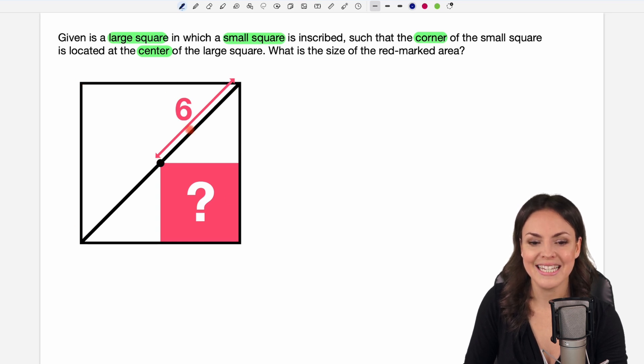We are also given this side of length 6 and the question is what is the size of the red marked area? Okay that's what we have to find.